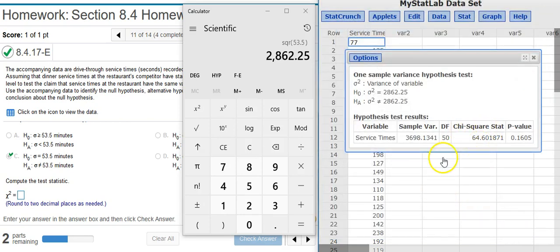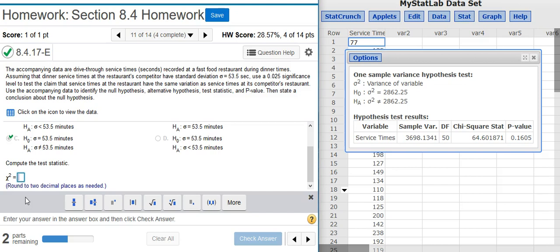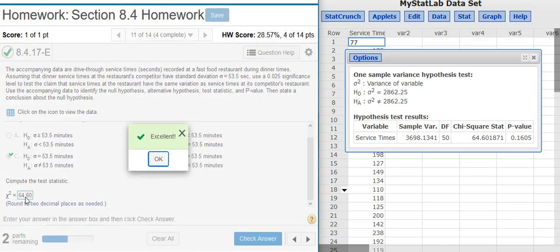And out comes the Chi-Squared Test Statistic, which is what we've got here, Chi-Squared. I'm asked to round to two decimal places. Excellent!